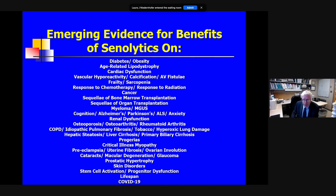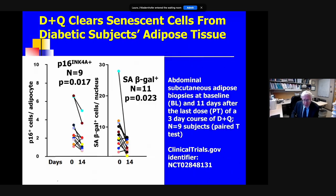As you would predict from the geroscience hypothesis, if senescence is a root cause contributor to aging processes, then multiple conditions should be alleviated by senolytics, and this indeed appears to be the case — our group, our collaborators, and many other groups have found this across multiple conditions, even in younger animals. For example, preeclampsia, a senescence-driven condition, can be alleviated with senolytic agents. This has led to clinical trials. The very first published one was in patients with obesity and diabetes — they had fat biopsies at day zero and day 14.